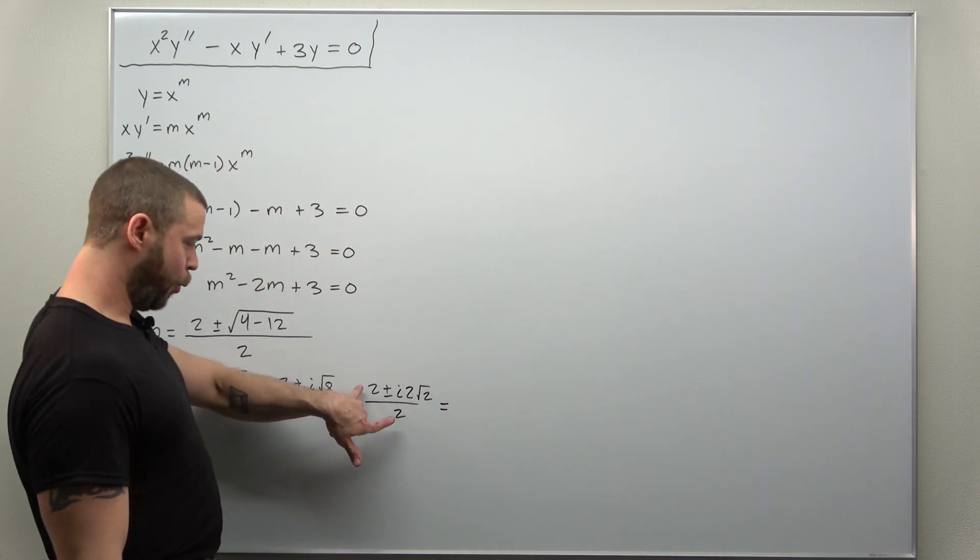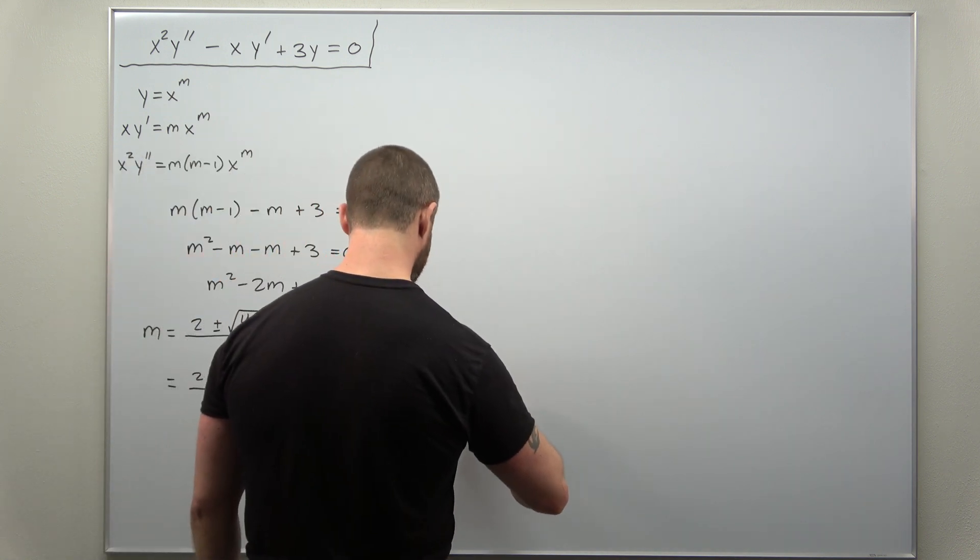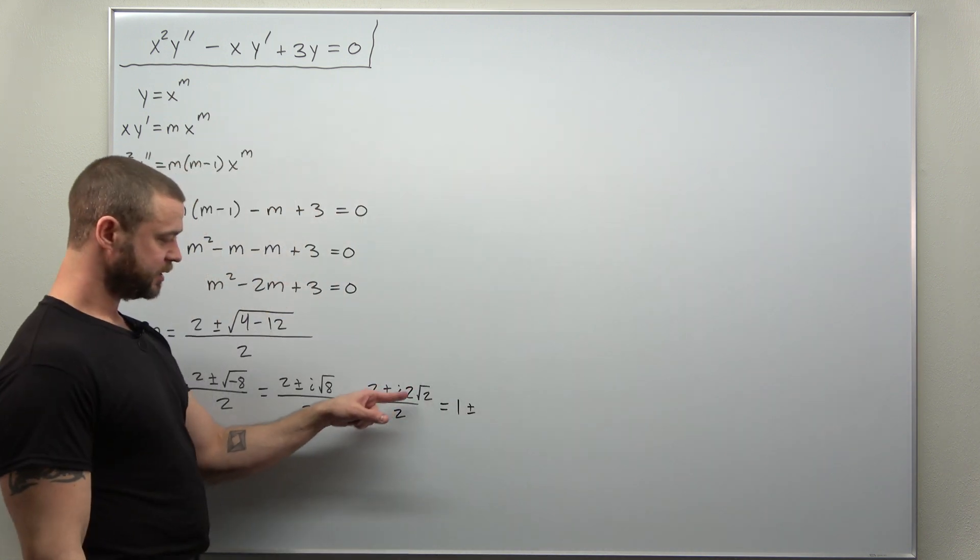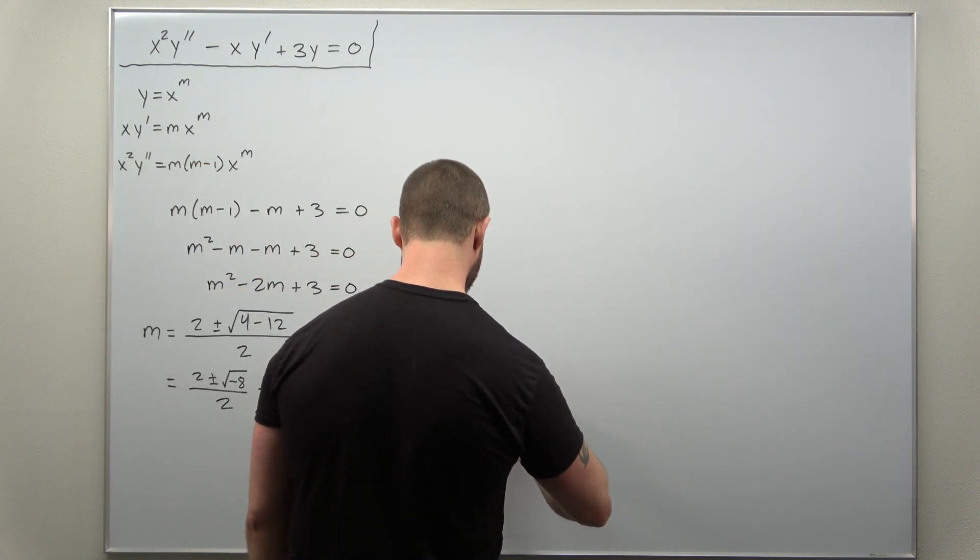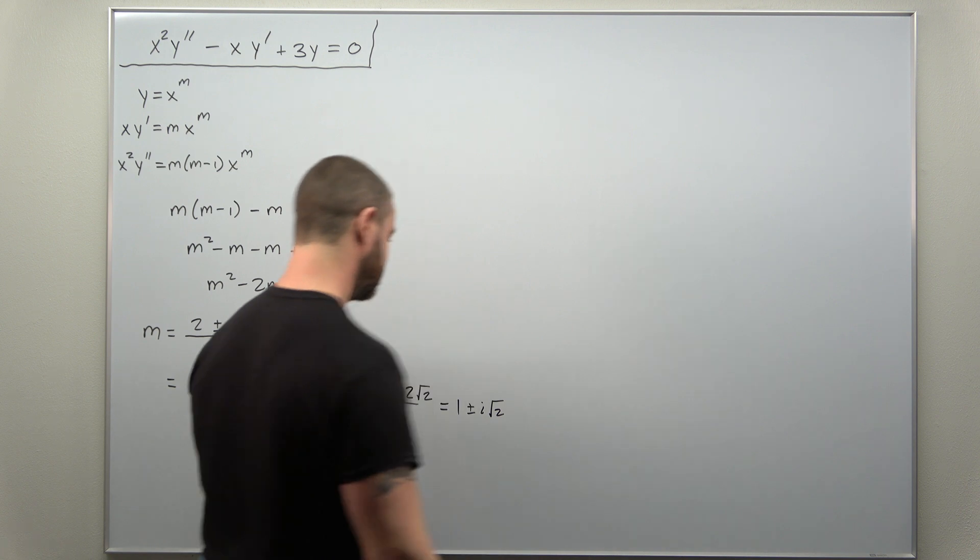And it looks like we'll get 1 plus or minus, the 2s cancel out, but you're left with i square root of 2.